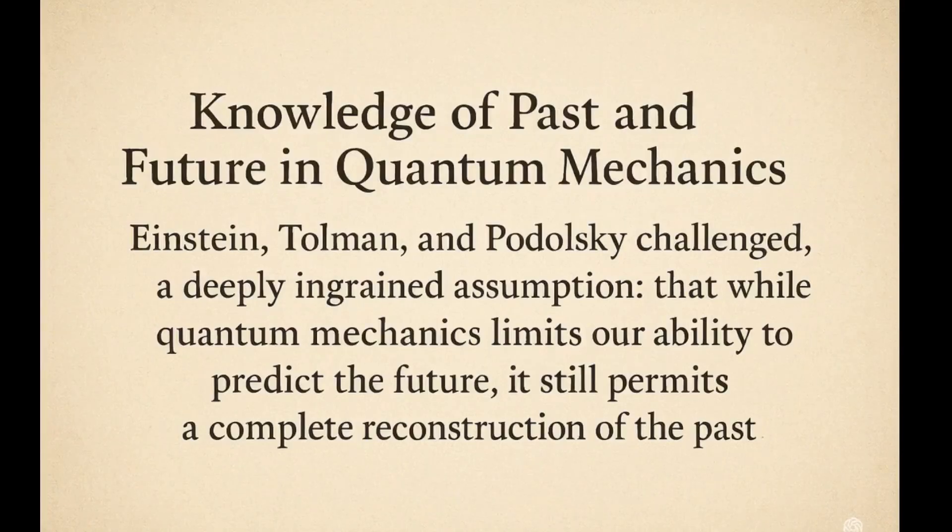The past is not what it seems. In 1931, Einstein, Tolman, and Podolsky challenged a foundational assumption of physics. While quantum mechanics clearly limits our ability to predict the future, it was still widely believed that the past could be fully reconstructed, that history was fixed, and only the future was uncertain.